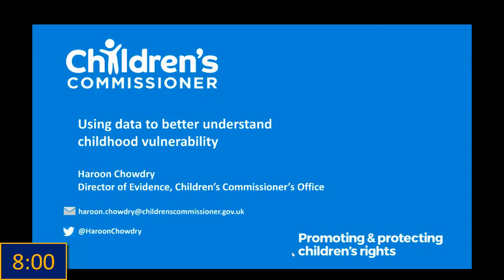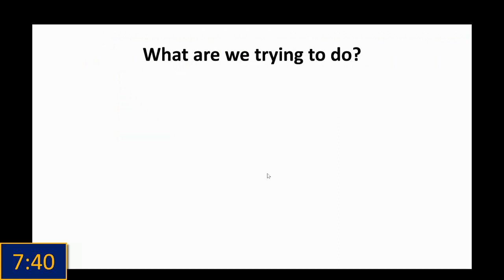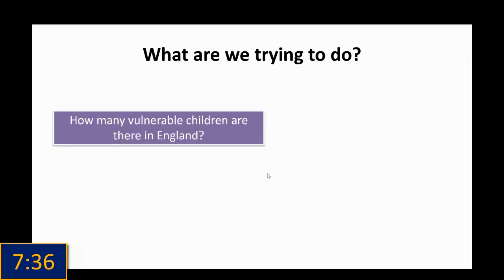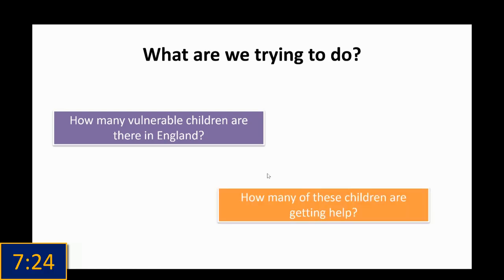I'm going to talk about how we at the Children's Commissioner's Office are using data to better understand childhood vulnerability. We are trying to answer two key questions: first, how many vulnerable children are there in England, which sounds like a very simple question but is actually quite difficult; and second, how many of these children are getting help, and how many are not — how many are falling through the gaps, as we like to say.